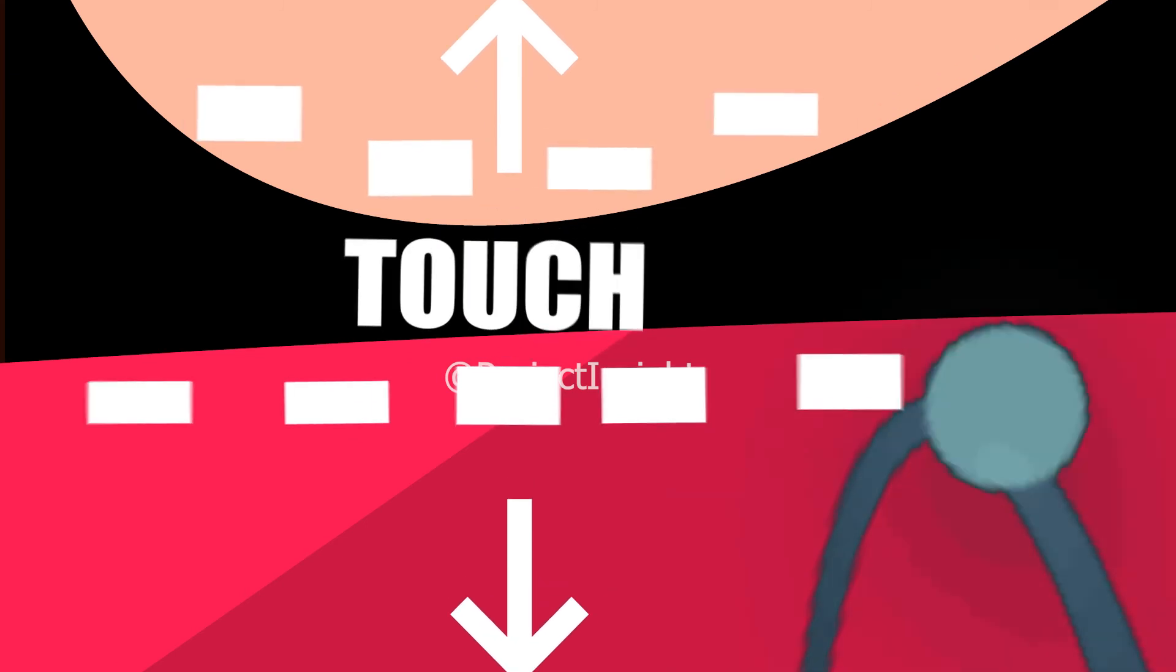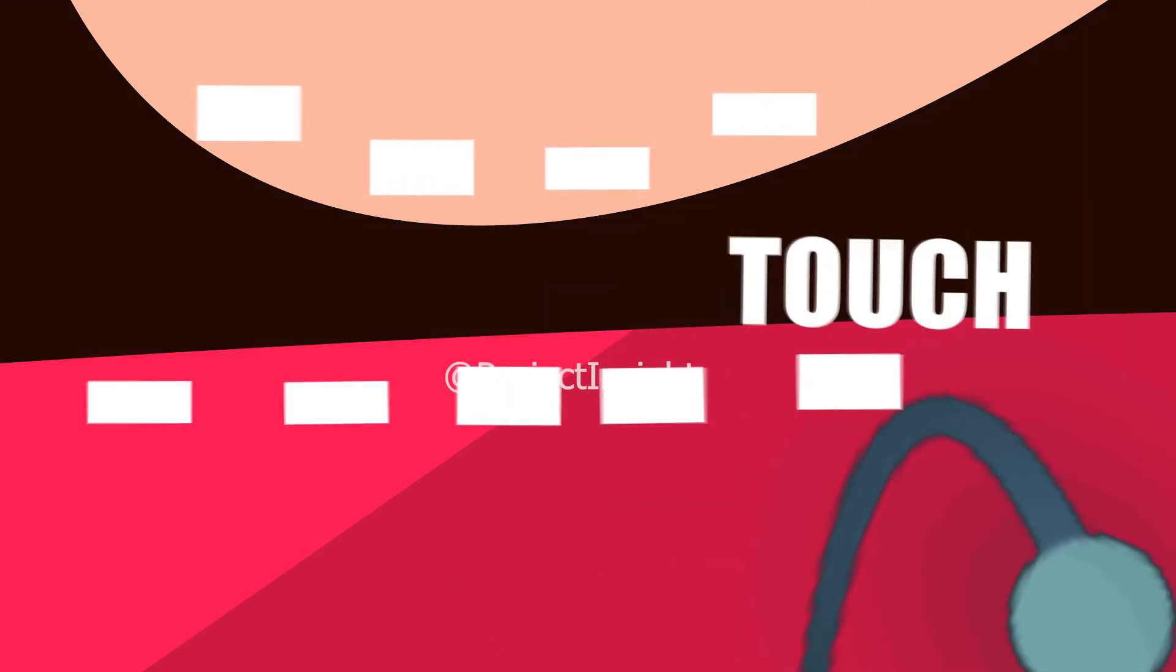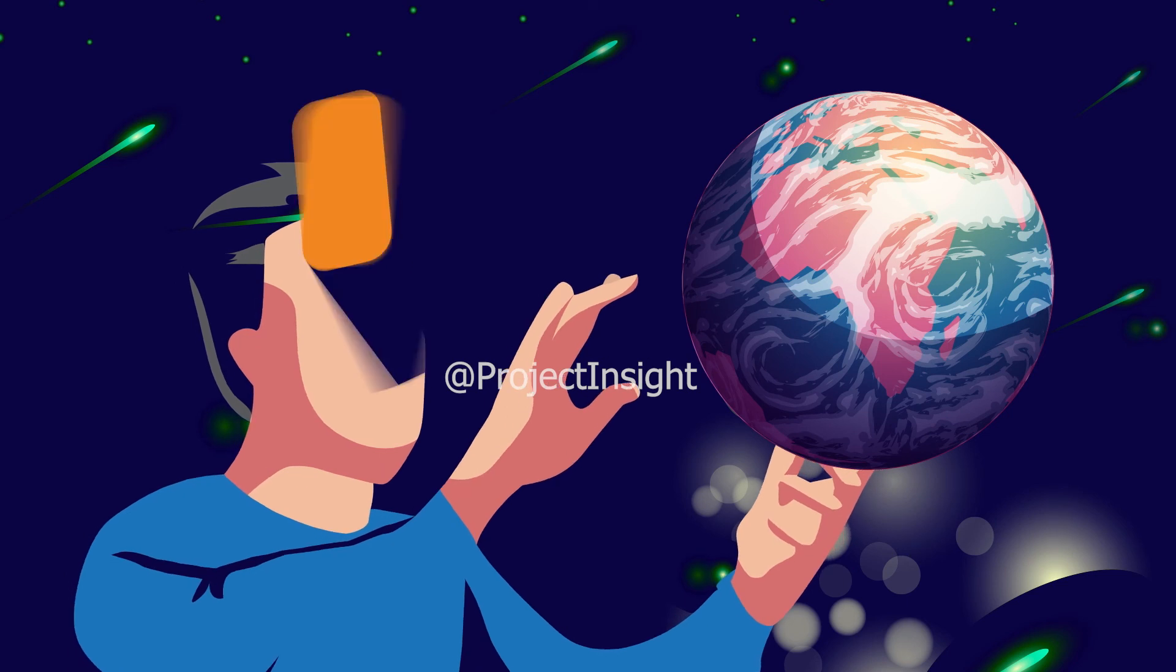Due to this force of repulsion, you get the feeling of touch. Though it may seem that your finger has touched the button, it is still nanometers away from the button. So we never touch anything in our life. We only get the illusion of touch.